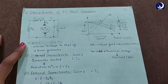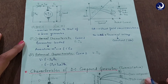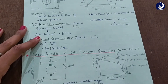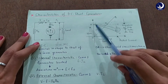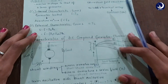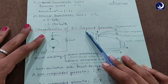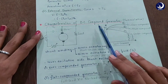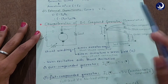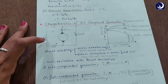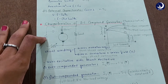Welcome back to the Edumoon tutorial series. This video is a continuation of the previous lecture, where we studied the characteristics of the DC shunt generator. Now we will study the characteristics of the DC compound generator. As you can see, the DC compound generator has both series and shunt excitations.